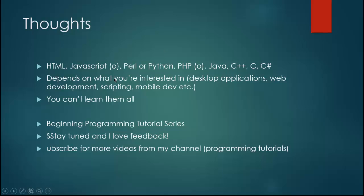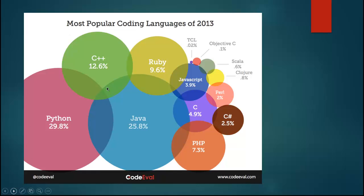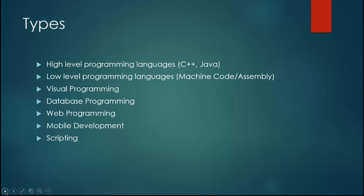I hope I've covered a lot in this video. Please leave feedback — if I've missed something or you want more videos, send me a message or add a comment, and please subscribe for more upcoming programming tutorials. To end, here's a slide from codeevil.com showing the most popular coding languages of 2013. Python is number one due to its simplicity and readability, which makes it really appealing for new programmers. Java is number two because it's portable across all sorts of devices. This gives you a flavor of what's really popular and being used today.